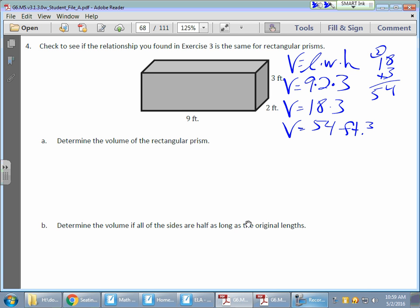And then what happens when we half all of the sides, all of them, not just one? Because if I just took half of one, I would effectively just take the volume and cut it in half. But what happens if I half every dimension here? And what does that look like?